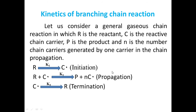Next we will come to the Propagation Step. In the Propagation Step, what happens? It forms P as a product plus N·C free radical, with k2 as the rate constant. This is called the Propagation Step. In the next step — the Termination Step.